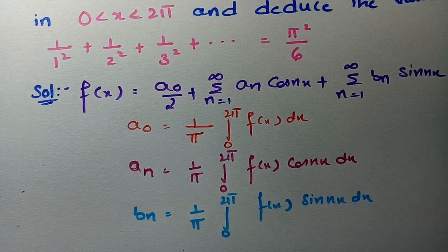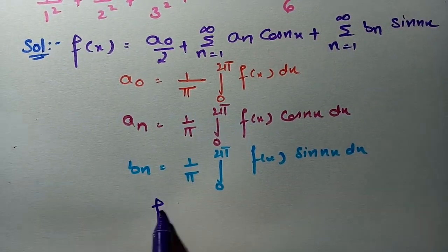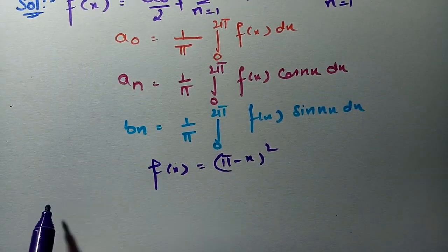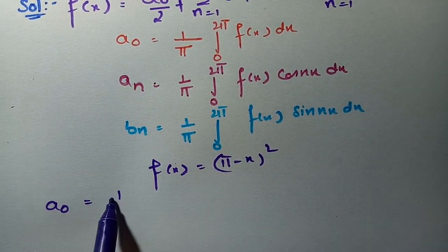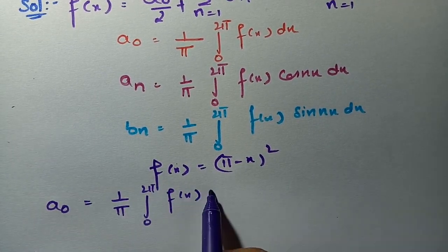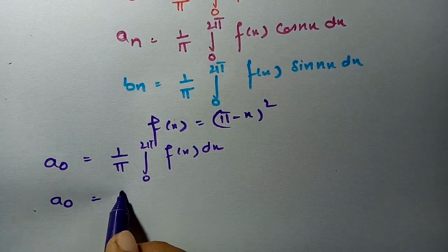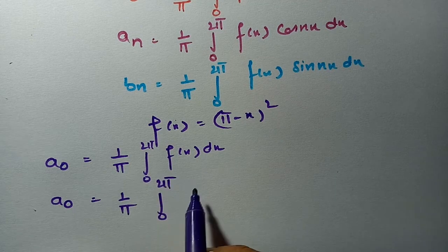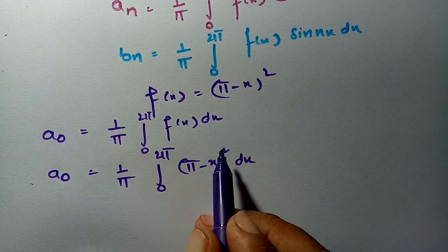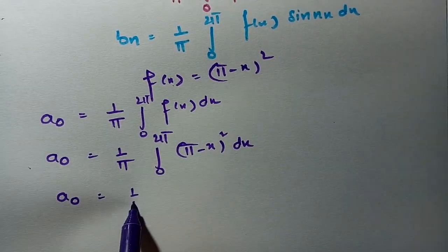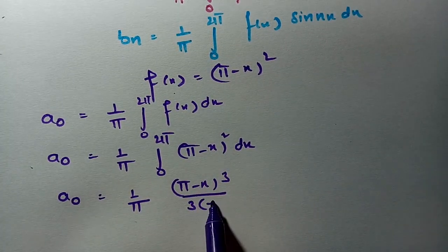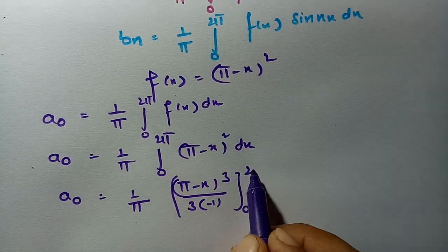Here f(x) is given from the question as (π - x)². We first calculate the a0 value. a0 = (1/π)·∫₀²π (π - x)² dx. As you know, the integral of x² is x³/3, so this will be (π - x)³/3, with a factor of -1 for the (-x) term, between limits 0 to 2π.